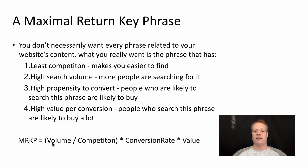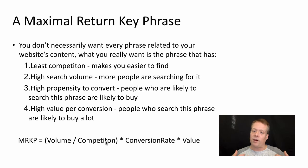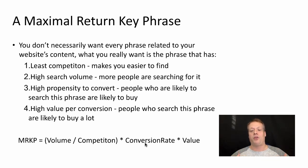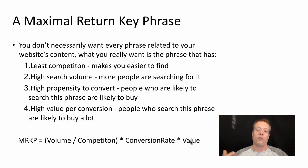You can think of it as: the value of the search divided by the competition tells you how many searches you're going to get. Times the conversion rate tells you how many conversions you're likely to get as a result of optimizing for that key phrase. Times the value tells you how much money per conversion — or how much overall value — you're going to get from optimizing for that key phrase.